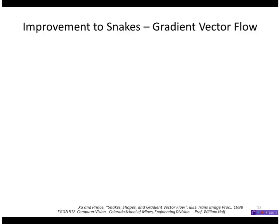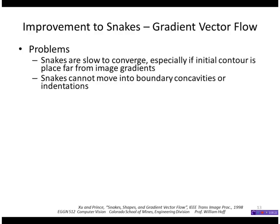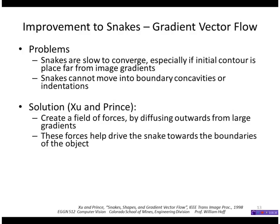One variation on this basic method is called gradient vector flow. It addresses the problem that snakes can be slow to converge and the initial guess has to be pretty close to where the final shape should be. The reason is that image gradient does not extend over a very large distance, so a point doesn't see an image gradient unless it's right on top of it. The solution is to diffuse those gradient values outward to create a field of forces, and those forces help drive the snake toward the boundaries of the object.